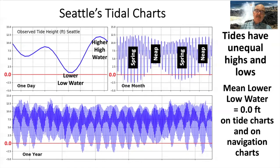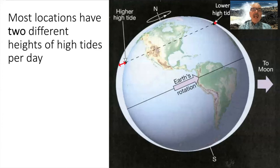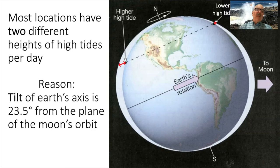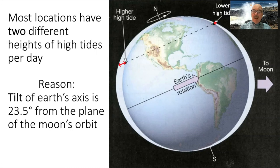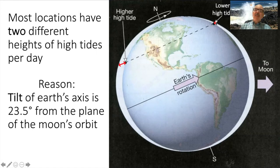The tides are asymmetric — one high tide is higher than the other. That's because the Earth's axis is tilted at 23.5 degrees from the plane of the Moon and Sun's orbit. So as the Earth spins around, we in the Pacific Northwest are under a larger high tide one time, and then 12 hours and 25 minutes later, we're under a lower part of that bulge. That is why we get the asymmetry.